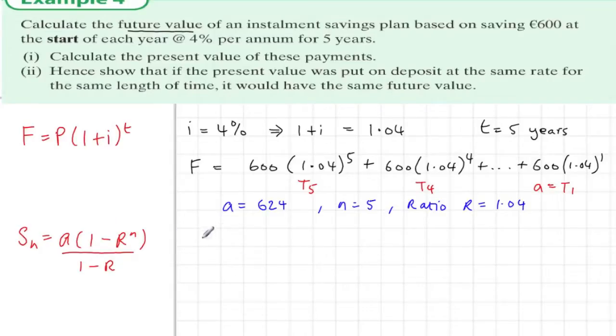Subbing in the values that we have here already, we know that the future value, the sum of this series, the sum of the 5 terms, is given by when we sub in the values into the formula. And then we carefully type this into the calculator. When we do, we get the answer 3379.79.